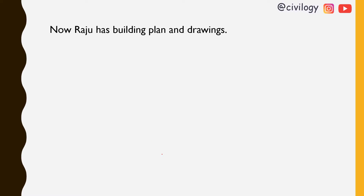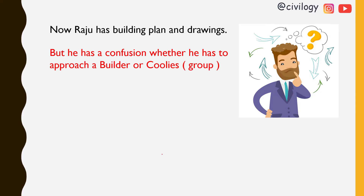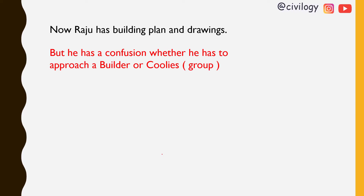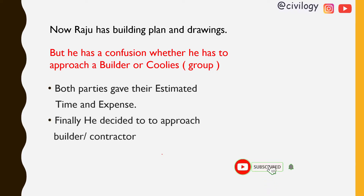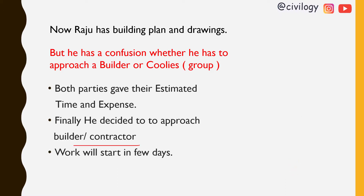Now Rajo has building plans and drawings, but he has a confusion about whether he should approach a builder or a group of workers called coolies. Both parties gave their estimated time and expense for the building. Finally, he decided to approach a contractor, and work will start in a few days. This is the pre-construction process.